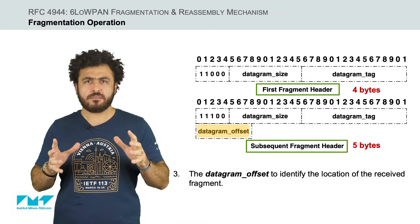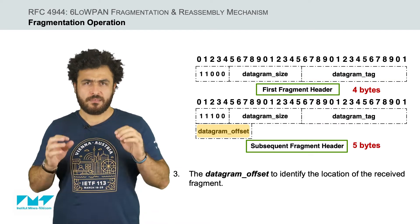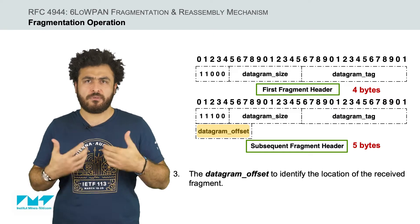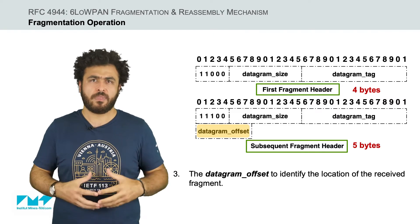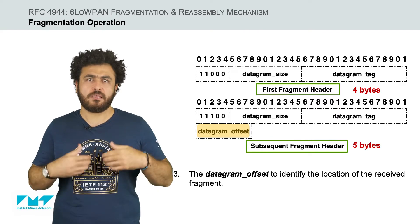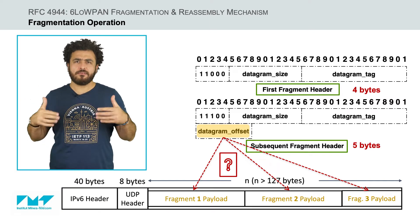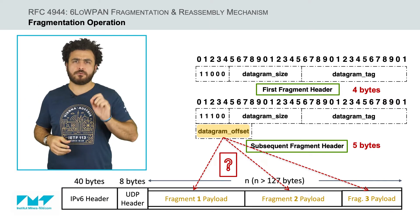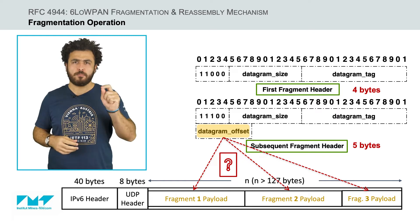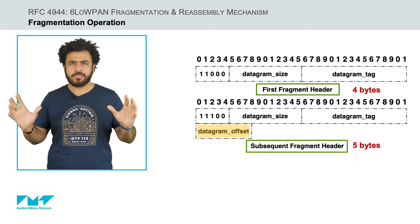The third and last field is the datagram offset. This field is included only in the second and subsequent fragments of an IPv6 datagram, and it specifies the offset in increments of 8 bytes. In other words, it identifies the relative position of the received fragment from the beginning of the payload datagram, to enable out-of-sequence delivery.